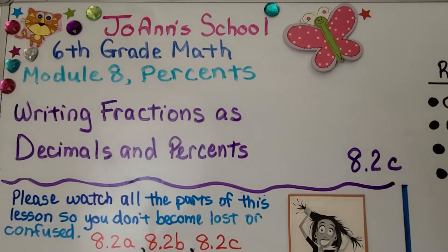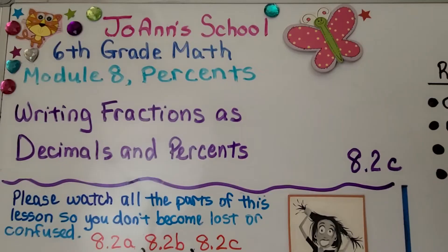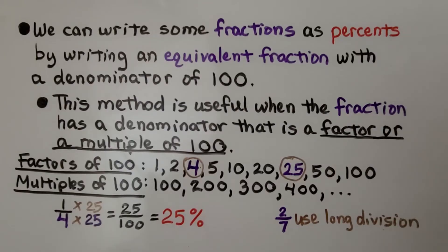Lesson 8.2c, Writing Fractions as Decimals and Percents. We can write some fractions as percents by writing an equivalent fraction with a denominator of 100. This method is useful when the fraction has a denominator that is a factor or a multiple of 100.